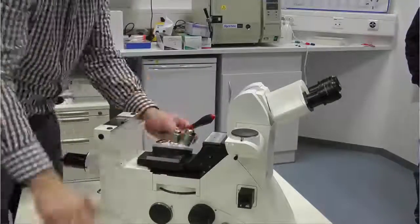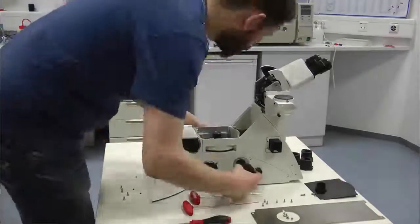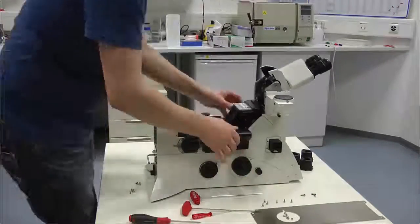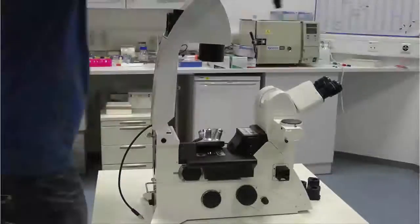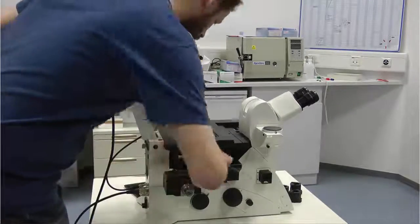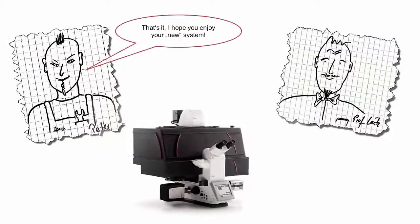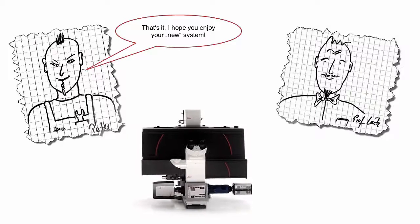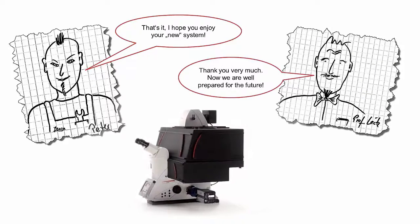Because the Leica DMI8 is fully modular, upgrading the system can be done on-site. Exchanging and upgrading parts is done quite easily and quickly. Within a few hours, Peter has finished upgrading the system with the new components for lifestyle imaging and the microscope is ready to use again. That's it. I hope you enjoy your new system. Thank you very much. Now we can get started.